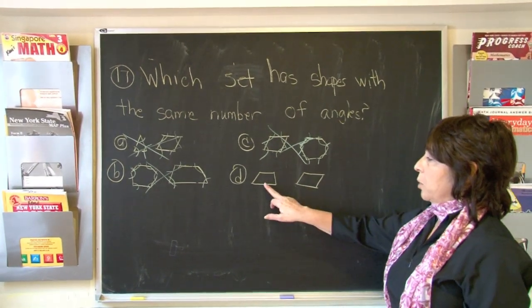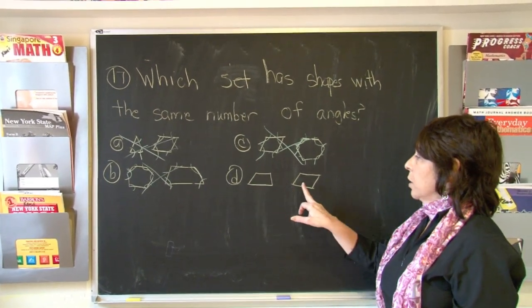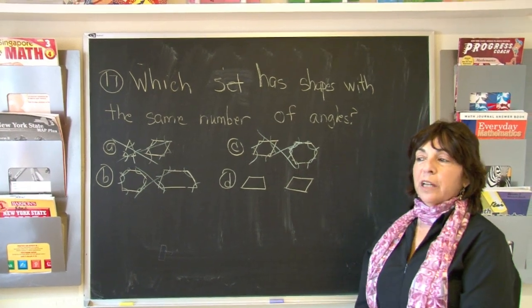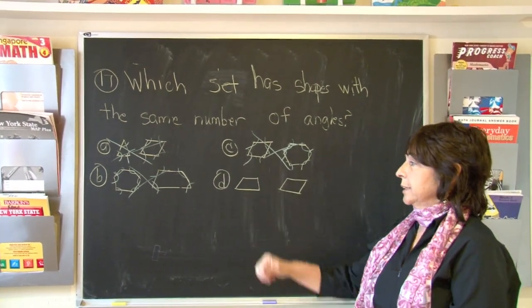Look at D. Let's count the sides. One, two, three, four. One, two, three, four. So based on what I've told you, you should know that D is the answer.